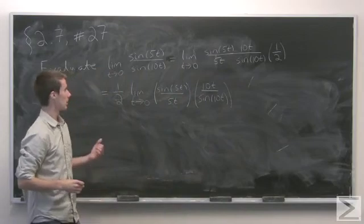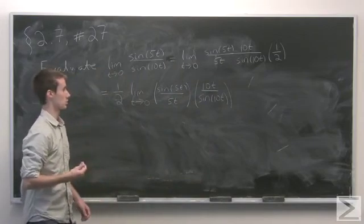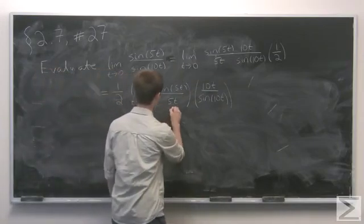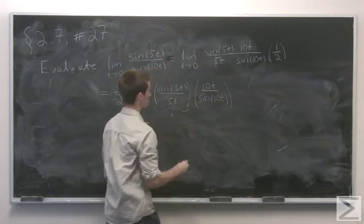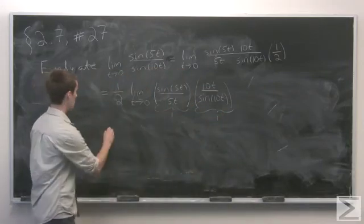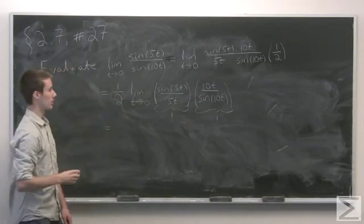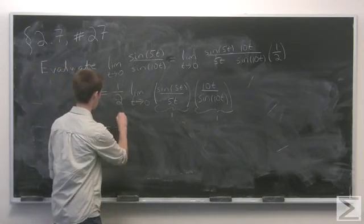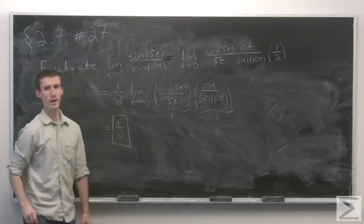And we see that each part of the limit just goes to 1. This here goes to 1, and that there also goes to 1. So the limit is actually 1 half times 1 or just 1 half.